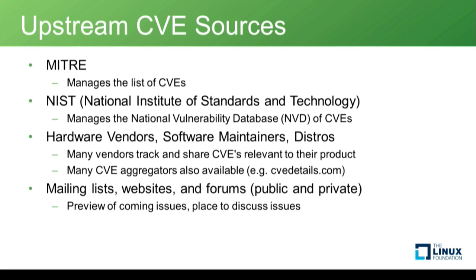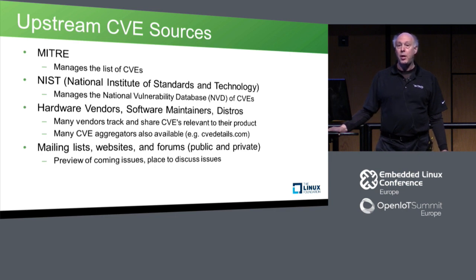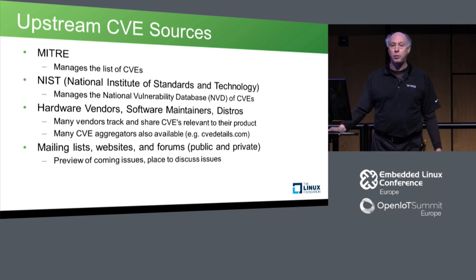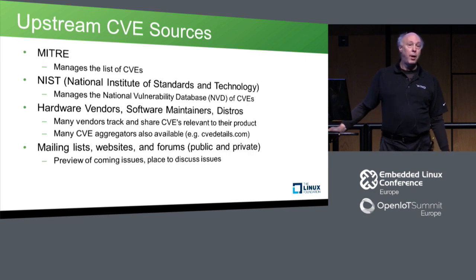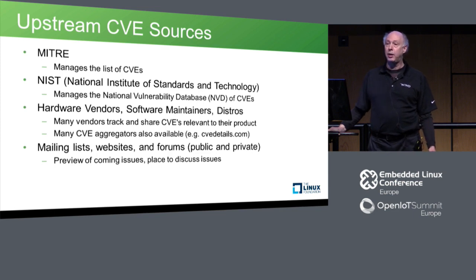The upstream sources: MITRE is the corporation responsible for maintaining the CVE list. They pass the actual data onto NIST — the National Institute of Standards and Technology — who have the NVD, the National Vulnerability Database, that tracks all the information. Hardware vendors also supply information. Software maintainers and distros also track things that apply to them, their response, and how it applies to their various releases. There are also many other sources — more ad hoc, mailing lists, websites, forums — some private, some public — where you can find stuff not yet published.